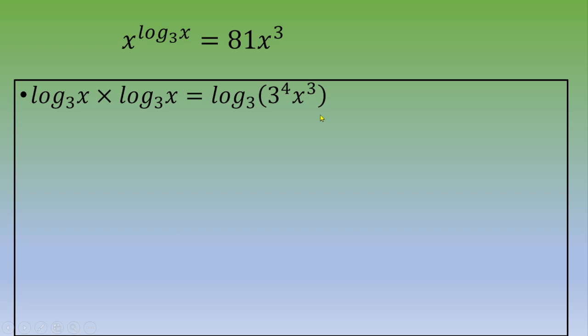Now let's modify the right side. We've got a multiplication, so we are going to use this formula: log base a of X times Y equals log base a of X plus log base a of Y. We end up with log base 3 of X squared equals log base 3 of 3 to the power of 4 plus log base 3 of X cubed.